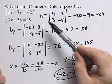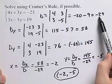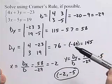It's important to note here that we could use Cramer's Rule because this determinant d is not equal to 0. Had this been equal to 0, we would not be able to use this rule.